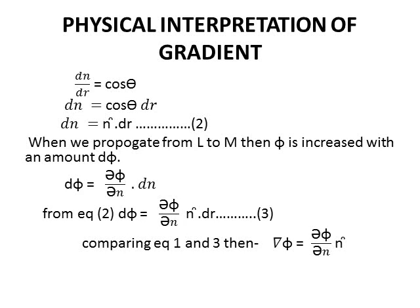Taking partial derivative again, d phi equals del phi upon del n dot dn. From equation 2, putting the value of dn, d phi equals del phi upon del n n cap dot dr. Now comparing equation 1 and 3, then we get del phi equals del phi upon del n dot n cap. This is the physical interpretation of gradient.